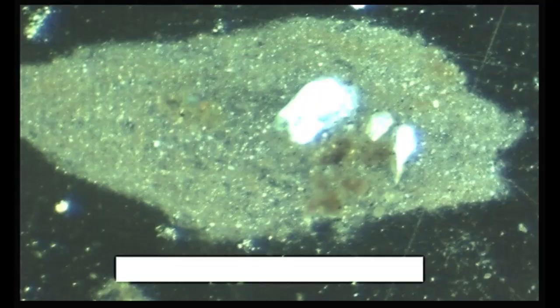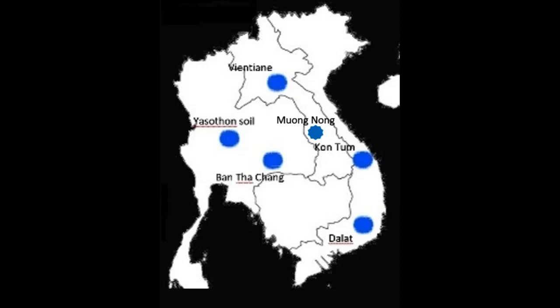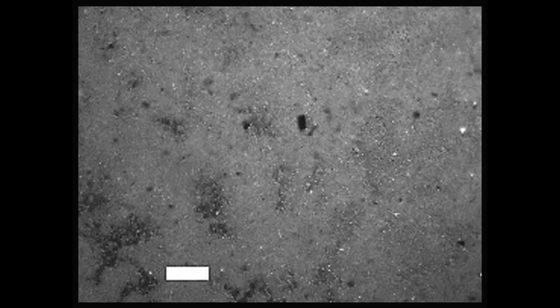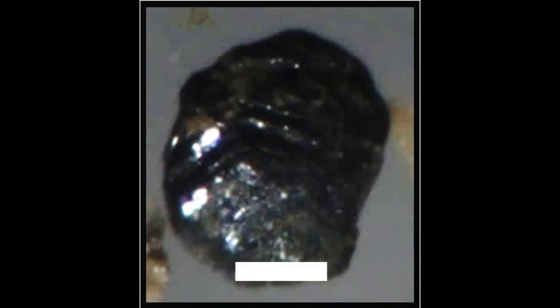Similar silt-sized quartz grains cover the Muang Nong tektite from Vientiane. The map shows locations where comminuted quartz was found covering splash-form and Muang Nong tektites. A splash-form tektite from Dalat has its surface covered by comminuted quartz — here brushed off — containing mini-tektite in carbonized wood.